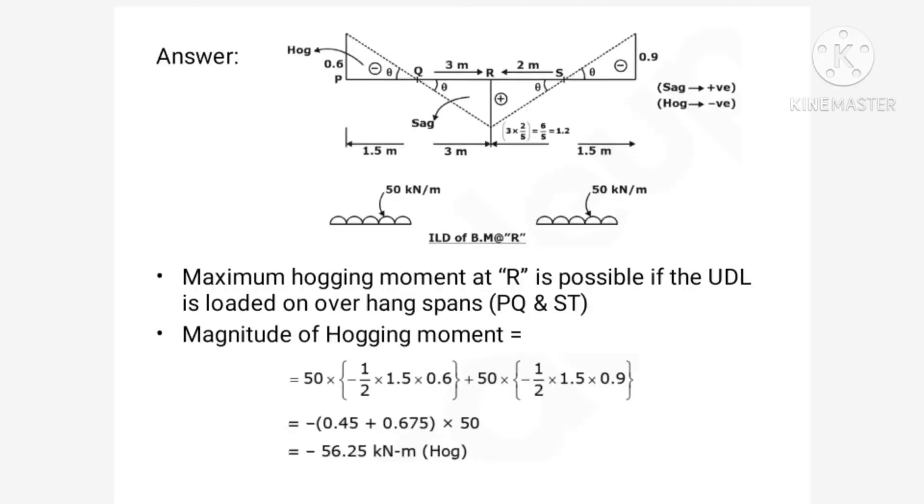So maximum hogging bending moment which is negative at R is possible if the UDL is loaded on overhanging spans PQ and ST. So this is how we can find the magnitude of hogging bending moment using influence line diagram. So the answer is minus 56.25 kilonewton meter. So option A is correct.